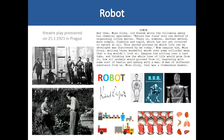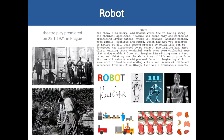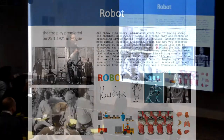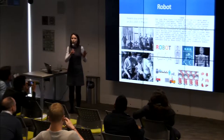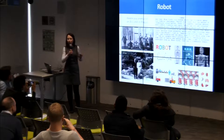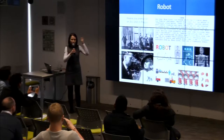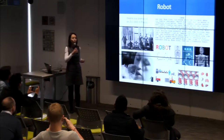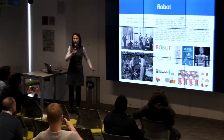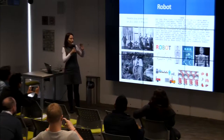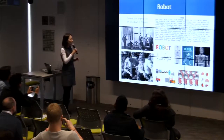R.U.R. stands for Rossum's Universal Robots, and this theatre play is almost 100 years old. It opens many contemporary questions. Please forget everything you know about robots, because each of you has some robot in mind — either a humanoid robot or an industrial robot — but this play was about different robots.